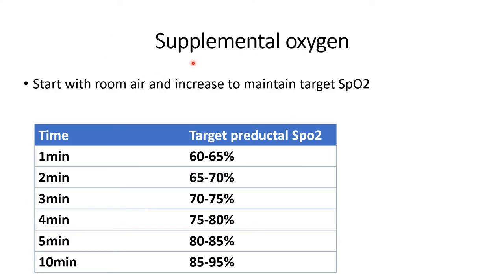After providing supplemental oxygen, start with room air then increase to maintain target SpO2. According to the time of birth, the target preductal SpO2 values are: at 1 minute, 60–65%; at 2 minutes, 65–70%; at 3 minutes, 70–75%; at 4 minutes, 75–80%; at 5 minutes, 80–85%; and at 10 minutes, 85–95%.